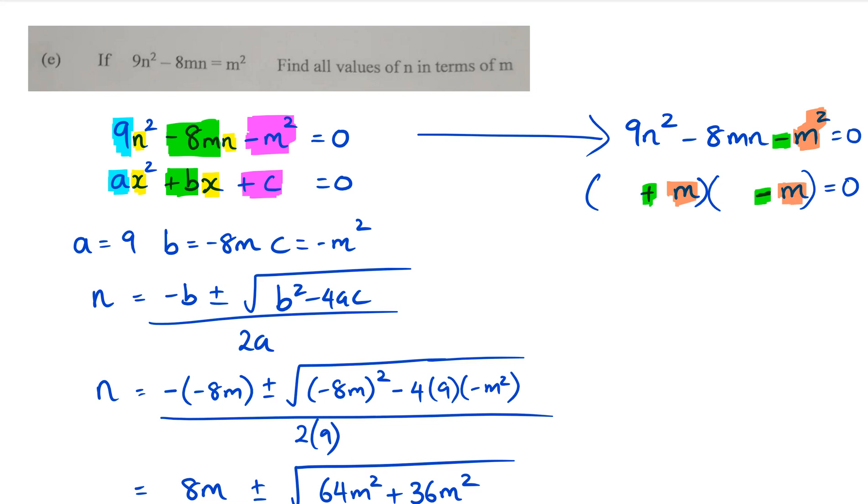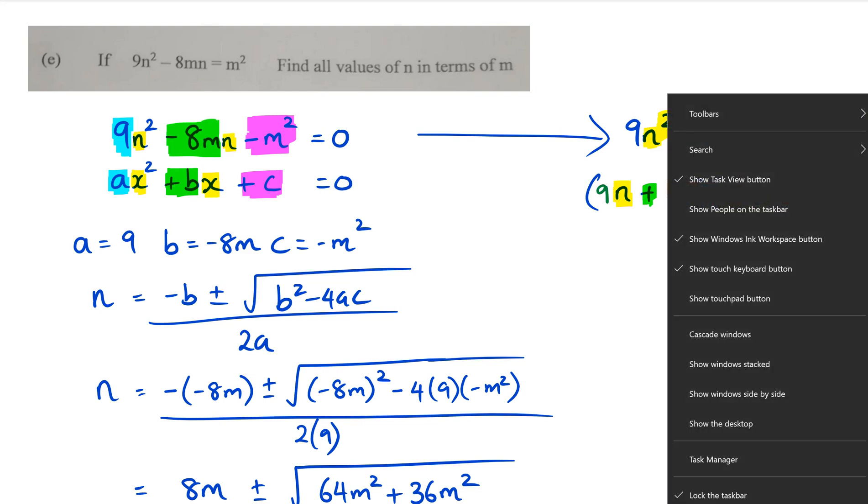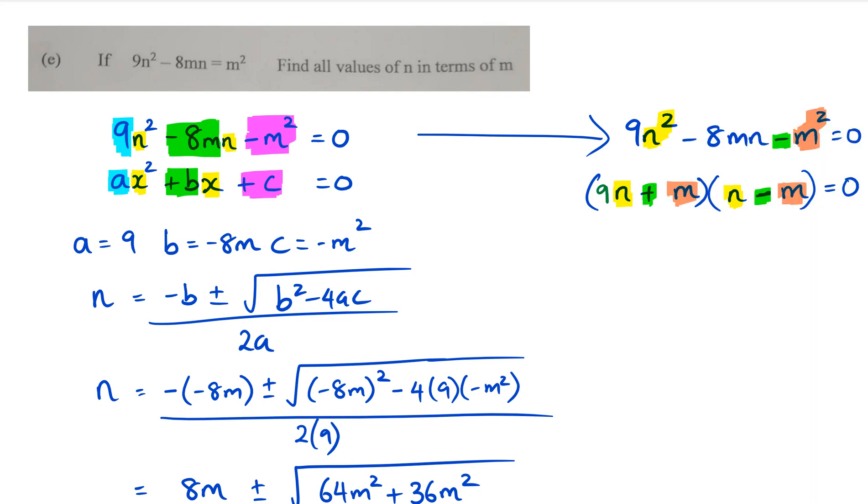The next step is looking at that n². If I look at the n² there, then I know that there's got to be an n here and an n here because n times n is going to be n². So the only thing that I'm missing is the middle term here, and I know that this side here has to be nine.